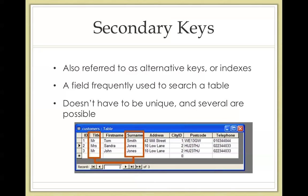Secondary keys are similar to primary keys and they are commonly referred to as alternative keys or indexes. A secondary key is a field that is frequently used to search in a table, but it does not necessarily have to be unique. Due to the lack of need for uniqueness, there is a possibility for several secondary keys to be present in a table.